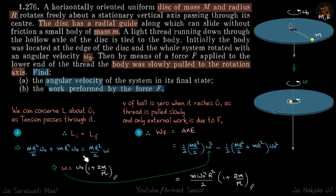Now second part: as discussed, velocity of ball is zero when it reaches O, as thread is pulled slowly. And only external work is due to F. So the change in kinetic energy is work done on the system.